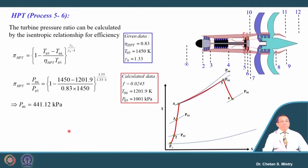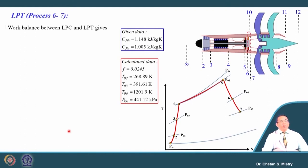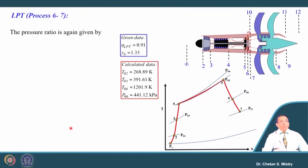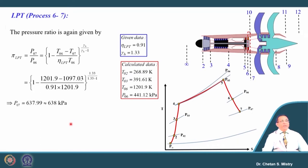This becomes the inlet condition for the LP turbine. The LP turbine drives the LP compressor, so writing the work balance equation gives the outlet temperature from the LP turbine as 1097.03 Kelvin. Using the isentropic efficiency of 91 percent to correlate the expansion ratio with temperature, the outlet pressure from the LP turbine is 638 kilo Pascal.